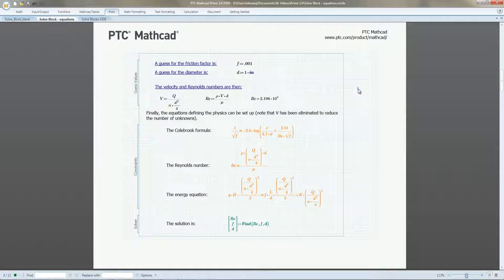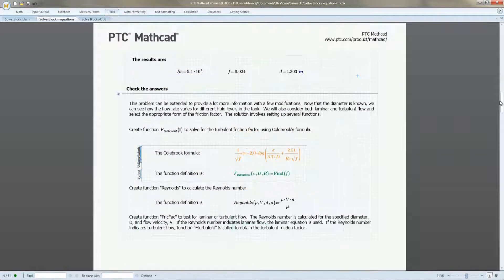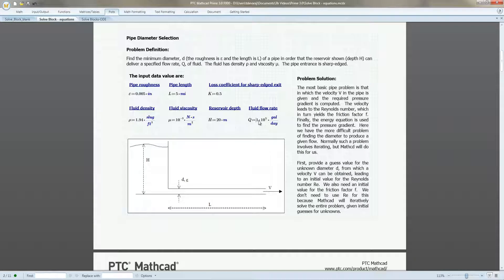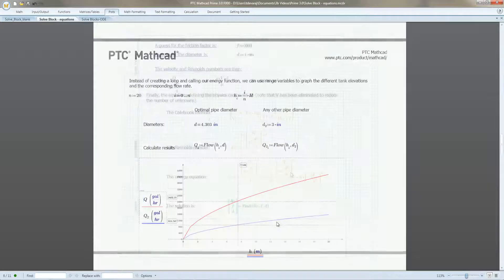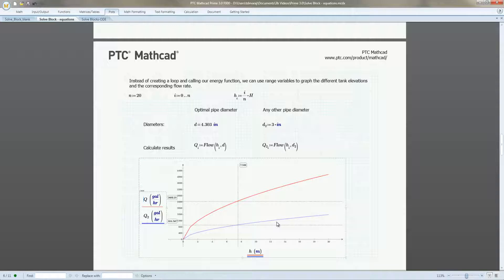We use the solve block to solve for the Reynolds number, friction factor, and pipe diameter. We extend this by parameterizing the solve block, allowing us to calculate the flow rate for any given reservoir depth. We plot this parameterized function to see how the flow rate, depth, and pipe diameters are related.